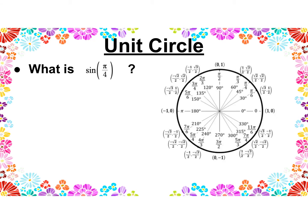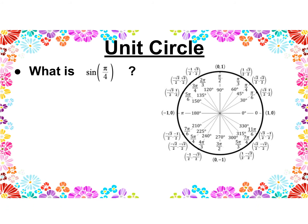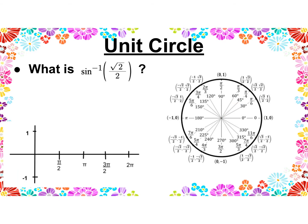Let's look at the unit circle and think about what is the sine of π/4. We go to π/4, and since the sine is the opposite side over the hypotenuse — and the hypotenuse is 1 — it's the y-value of the point, which is √2/2. So if I ask what's the inverse sine of √2/2, that's asking which triangle has a sine ratio of √2/2. Well, that happens at π/4 but also at 3π/4, and sometimes we only want one answer, in which case we use the capital S for the principal answer.